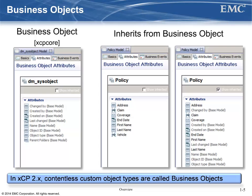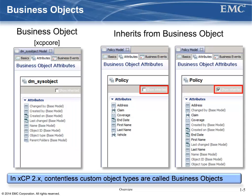In the case of an instance of an invoice, there would be no need for a file to be stored in the repository for each invoice. All that is needed are the values of the properties for that instance of the invoice, such as vendor name, address, invoice number, amount, etc. You can create a business object model that has no additional custom attributes, or a business object model that inherits attributes from another business object model. Business object models do not contain content, renditions, or versions. Business objects cannot inherit from content models — they can only inherit from business object XCP core or other custom business object models.